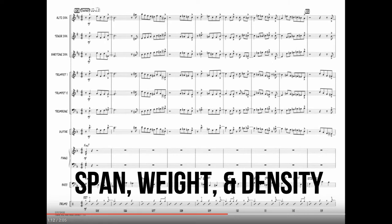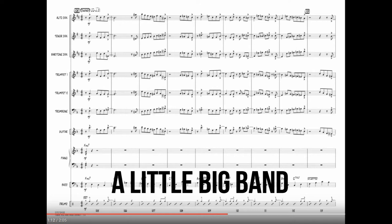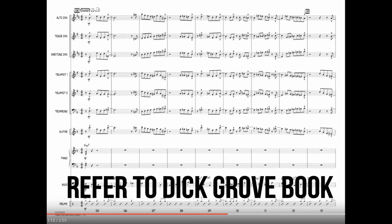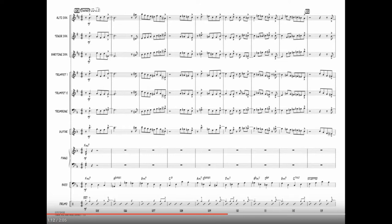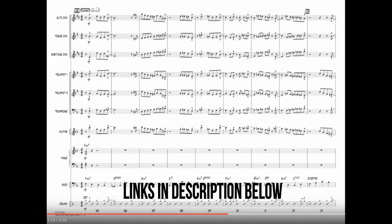This is actually for six horn players and rhythm. I wanted to point out a few things about how he basically manipulates span weight and density with these lines. If you'll notice, this is actually at the end of the chart after the solo. You can click the link below and listen to the whole chart. The link to purchase the chart is below as well, it's put out by Hal Leonard. I hope they don't mind me talking about this, but they can make some money if you click on the link below.